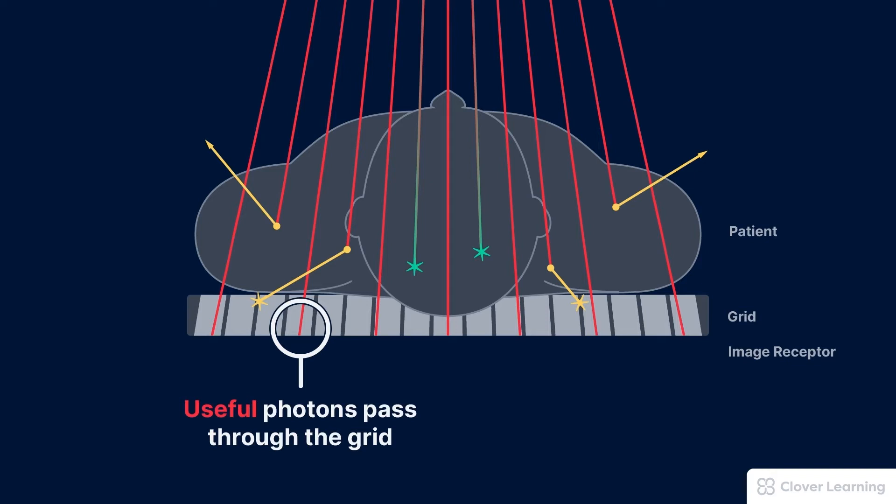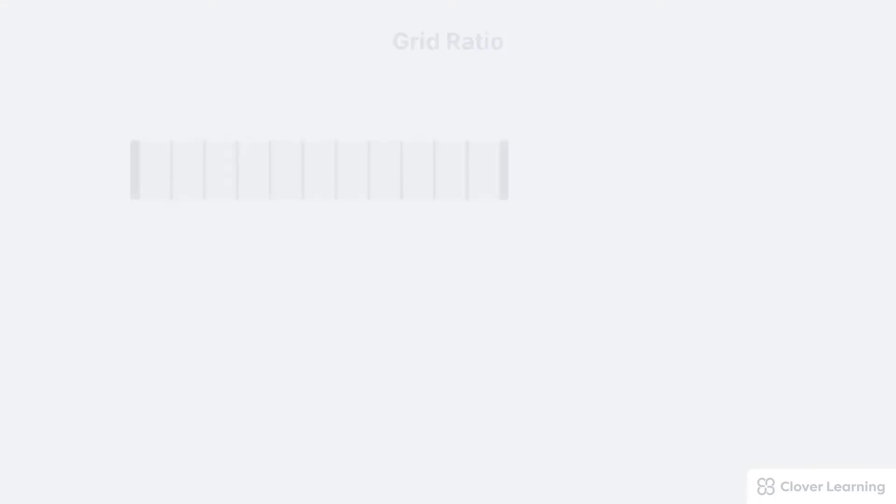However, scatter photons that are out of line with the main beam and carry only meaningless noise strike the vertical strips and are absorbed. Useful photons are allowed to pass through, but scatter photons are obstructed by the grid.